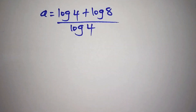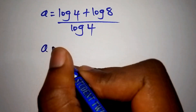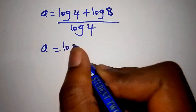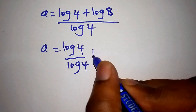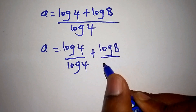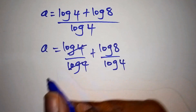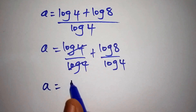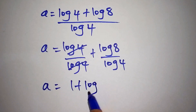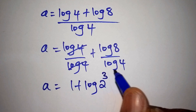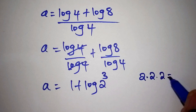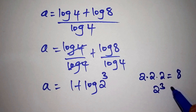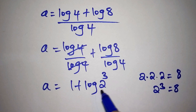We divide both terms by the log of 4, giving us log 4 over log 4, plus log 8 over log 4. Log 4 and log 4 cancel each other, so the value for a is 1 plus log 8 over log 4. The log of 8 can be written as the log of 2 to the power of 3, since 2 times 2 is 4, and 4 times 2 is 8. So 2 to the power of 3 equals 8, all over the log of 4.